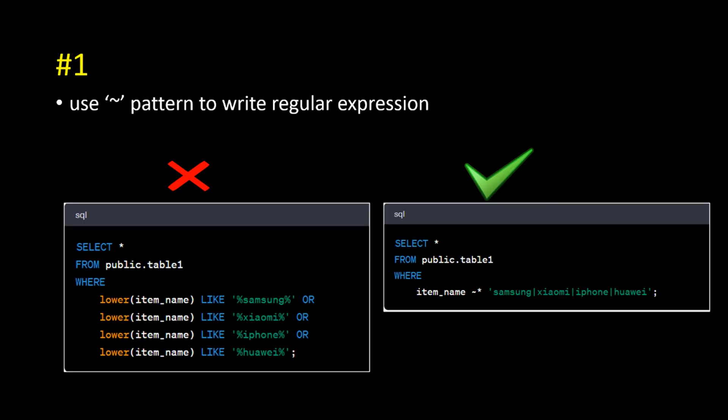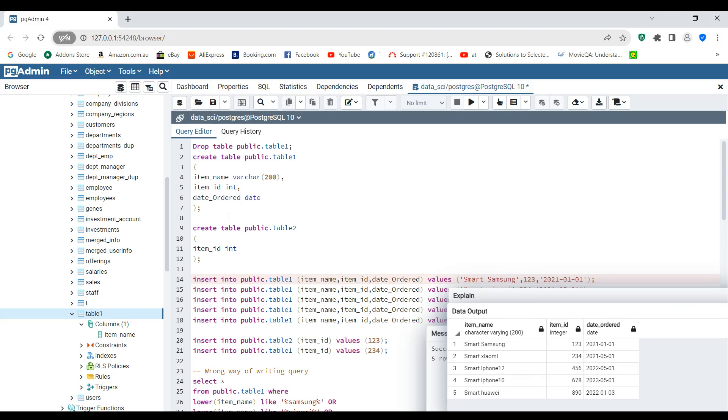What's up guys, today I will be talking about top 8 techniques of writing better queries in PostgreSQL. So let's get started. Number one is: use the SIMILAR pattern to write regular expressions. On the left you would see the wrong way of writing the query and on the right you will see the correct way of writing the query.